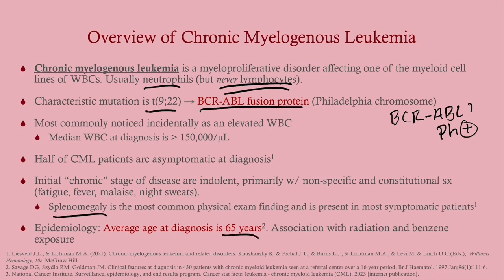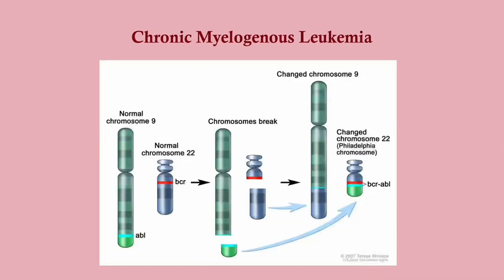Average age for CML is 65 years — this is not a disease of young people. It is associated with radiation and benzene. Radiation is a big cause for any of these leukemias — think of patients already treated for some other cancer or with prior chemotherapeutics. Look for a history of unrelated cancer. Another important translocation close in significance is t(12;21) in ALL, which occurs in kids. A translocation is where a piece of one chromosome moves to another reciprocally.